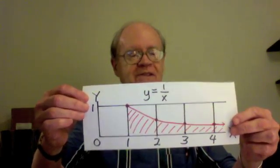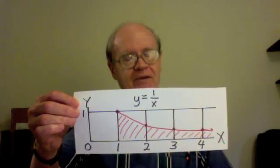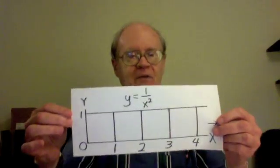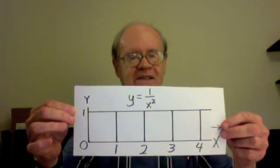Now we're going to compare this with a second graph, where the equation is a bit different from this one. This one was y equals 1 over x. The second one is y equals 1 over x squared. That means 1 over x times x.